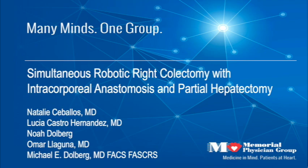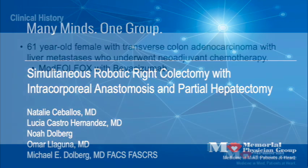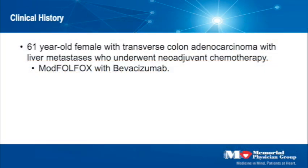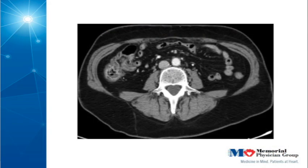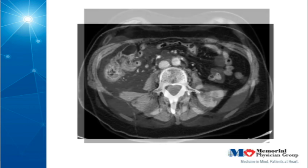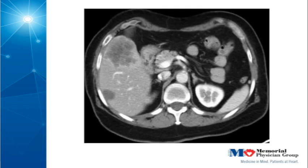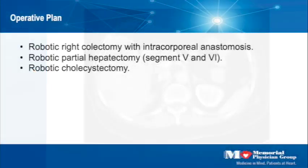This video displays the surgical management of a 61-year-old female with metastatic colon cancer to the liver. The primary tumor was located in the transverse colon and the liver metastases were located in segments 5 and 6. She received neoadjuvant chemotherapy and was then brought to the operating room.